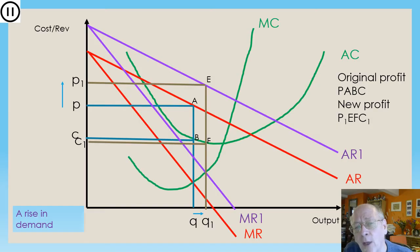We then follow that quantity up to the new AR curve, the new demand curve, to find the price that this quantity will sell at. And it's P1, and you will see, just like on theme one, that the price has gone up and the quantity has gone up as well.